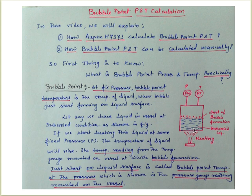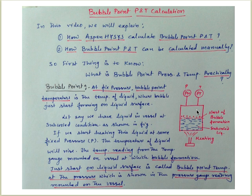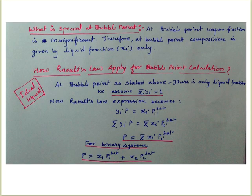If we start heating a liquid in a vessel at a sub-cooled condition, the temperature of the water will rise. At a certain temperature, bubble formation on the liquid surface will start. That temperature at which the first bubble starts on the liquid surface is known as the bubble point temperature at that fixed pressure reading.